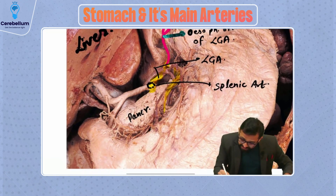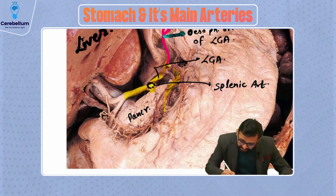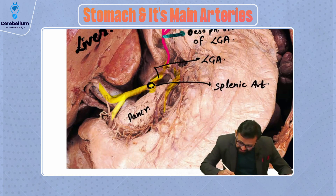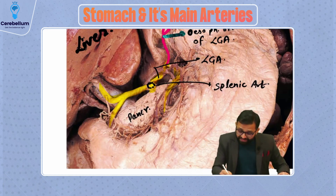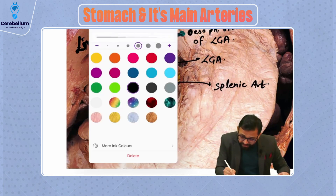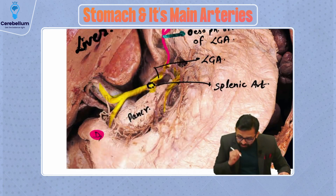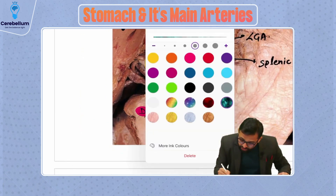You can observe another artery which is running towards the liver. Definitely it is our common hepatic artery, which is dividing into the proper hepatic artery and the gastroduodenal artery. In surgery, the most common site for duodenal ulcer is located within the first part of the duodenum — so which artery would be involved? Definitely the gastroduodenal artery.